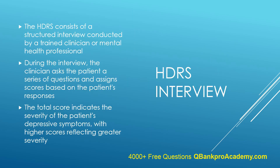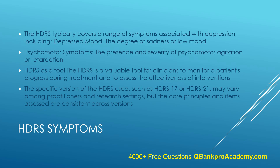The HDRS consists of a structured interview conducted by a trained clinician or mental health professional. During the interview, the clinician asks the patient a series of questions and assigns scores based on the patient's responses. The total score indicates the severity of the patient's depressive symptoms, with higher scores reflecting greater severity. The HDRS typically covers a range of symptoms associated with depression, including the degree of sadness or low mood, presence and severity of guilt or feelings of worthlessness, suicidal thoughts, sleep disturbances, psychomotor symptoms, appetite changes, anxiety symptoms, retardation, agitation, and general somatic physical symptoms. Each item is rated on a scale of 0 to 4 or 0 to 2, depending on the version used, with higher scores indicating more severe symptoms.